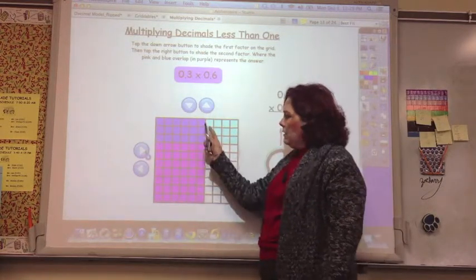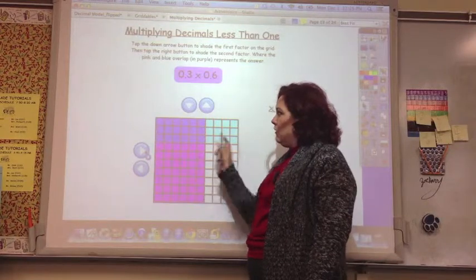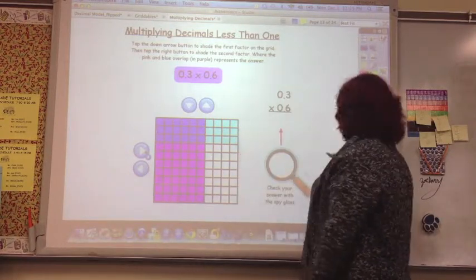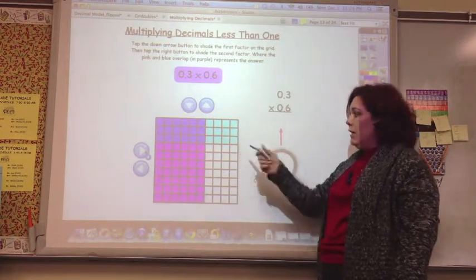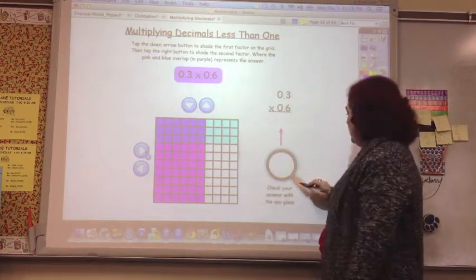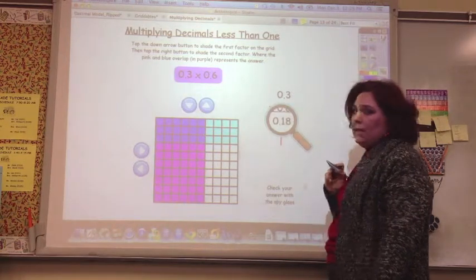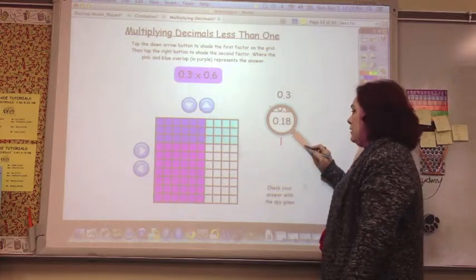And so that gives us a total of 6 times 3, which is 18. And so 18 hundredths, because that's what it shows, 18 hundredths. And our spyglass says 18 hundredths. So that is correct.